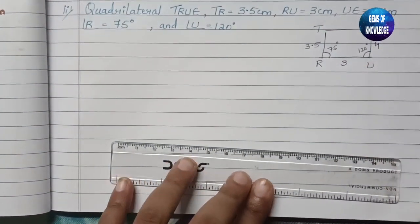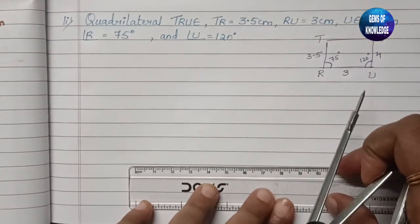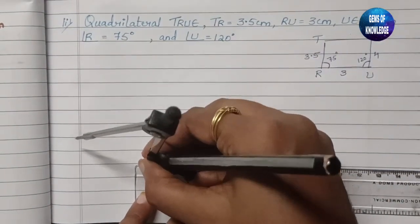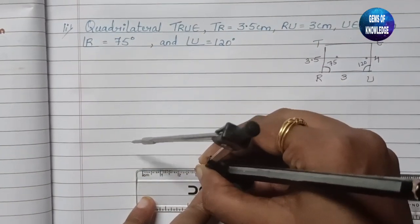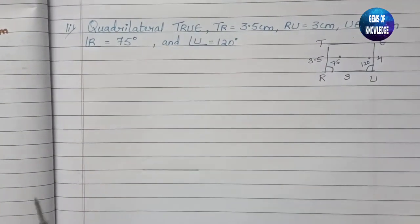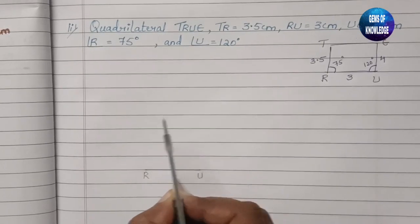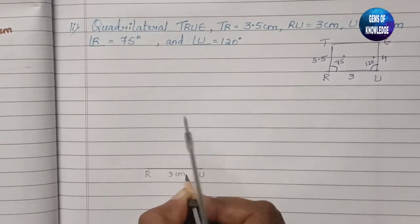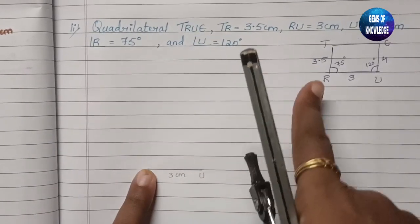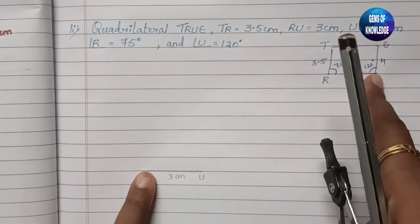We will start with RU = 3 cm as the base. Draw a 3 cm line; mark the left end as R and the right end as U. From R we need 75° and from U we need 120°.